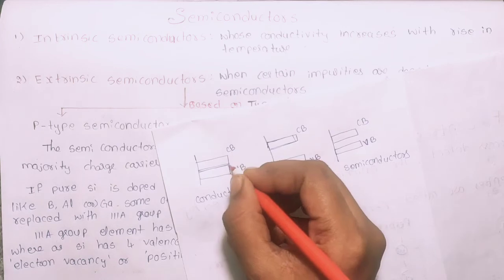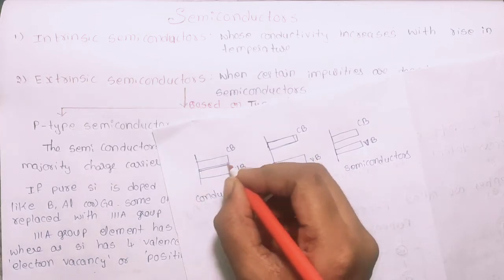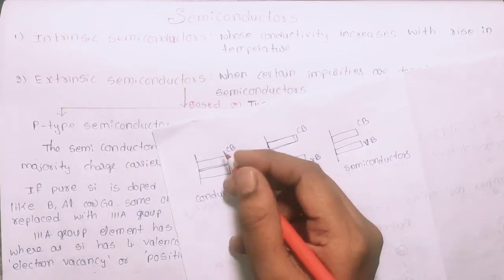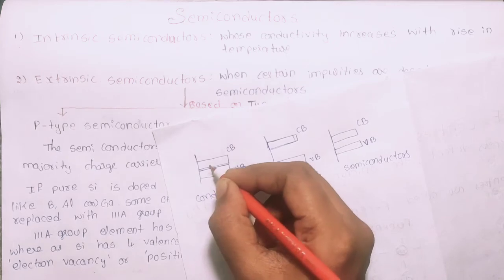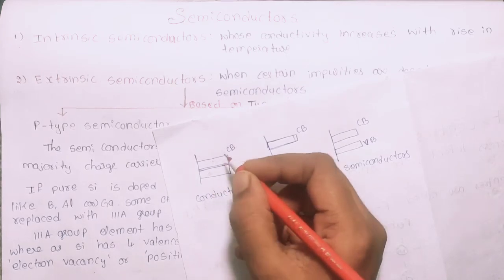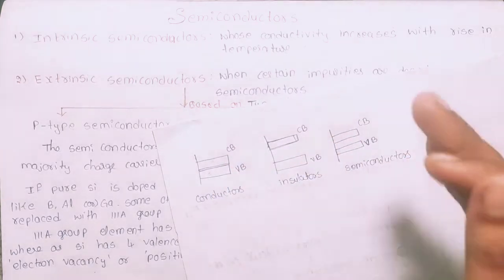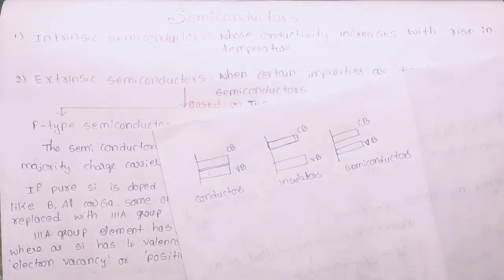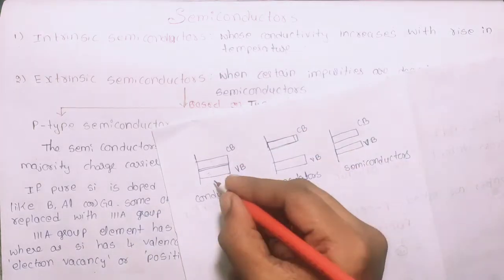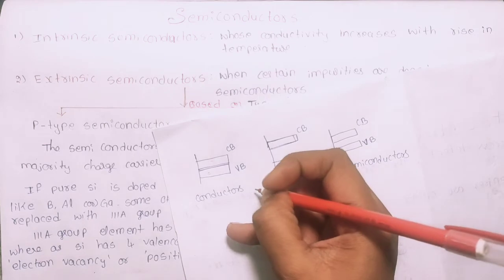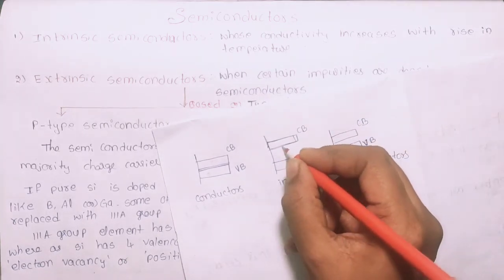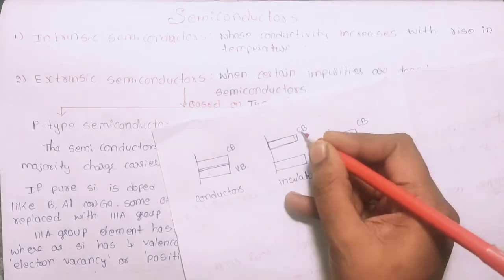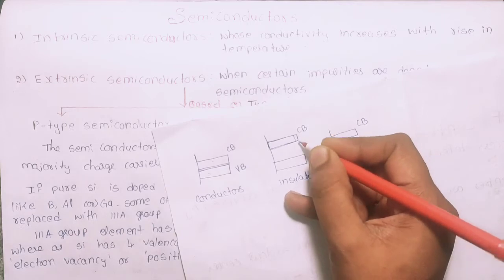For conductors, there is no gap between the valence band and the conduction band. Electrons pass and current flows — that is how conductors conduct electricity. For insulators, there is a large gap between the valence band and the conduction band.